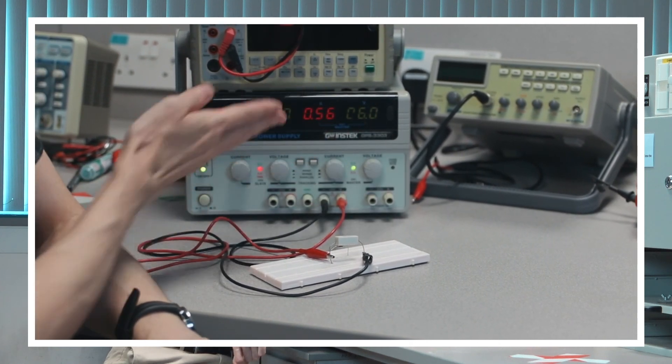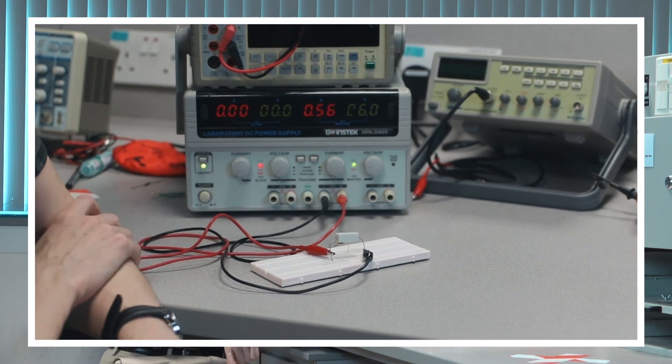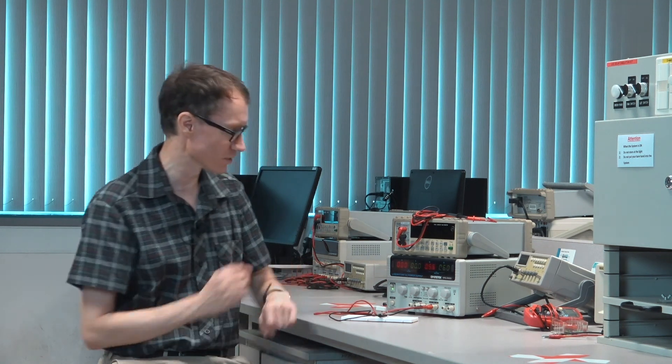6 squared divided by 10 ohms is 3.6 watts, which is less than 5. So this is within the rating of this resistor. And it's not on fire and we don't have any problems.